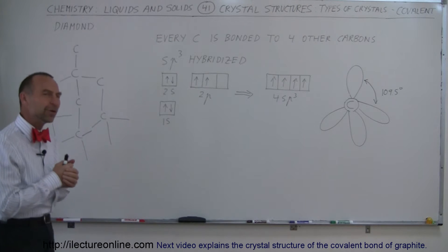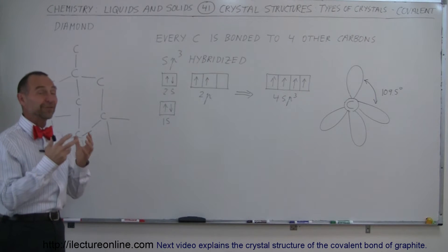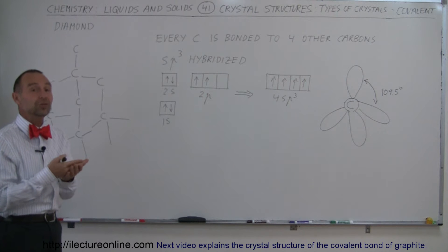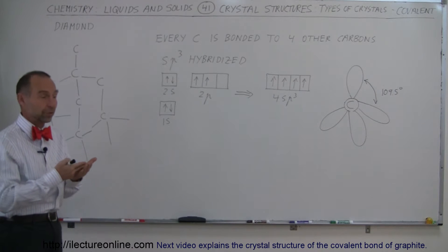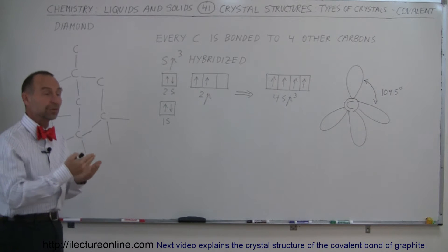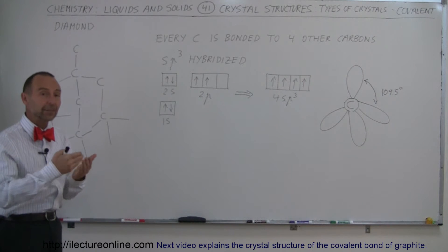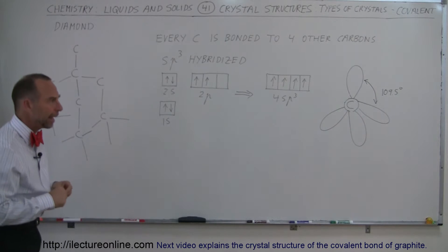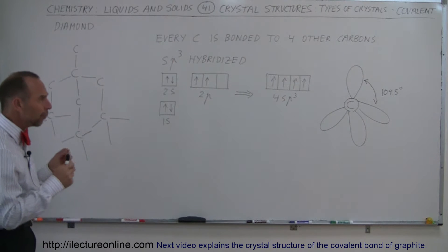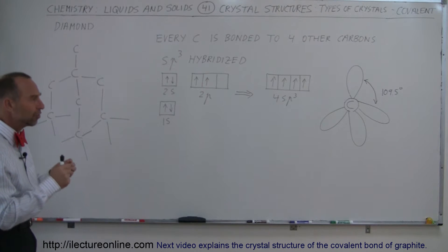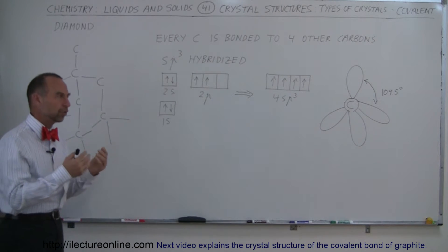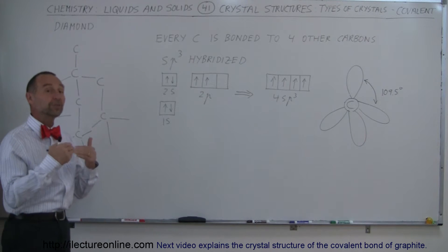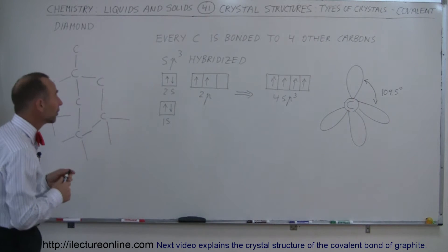Just about everybody knows that diamond is a very, very strong substance. Matter of fact, diamond is used in industry to cut through steel and to grind down and bore through steel and iron and so forth. The reason why diamond is such a strong material is because of its bonds — the way it's bonded together.